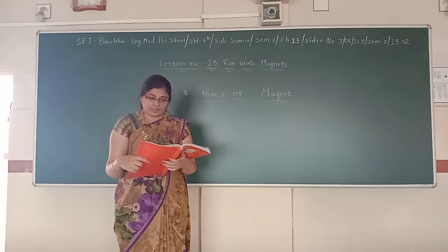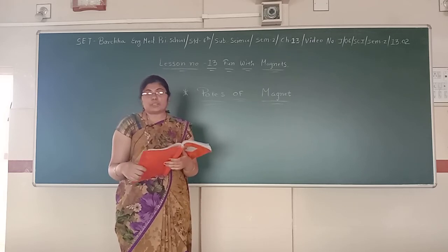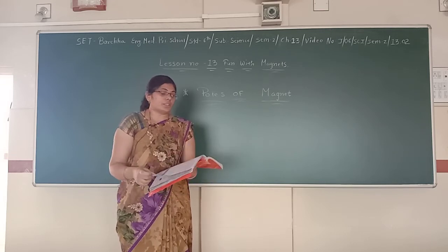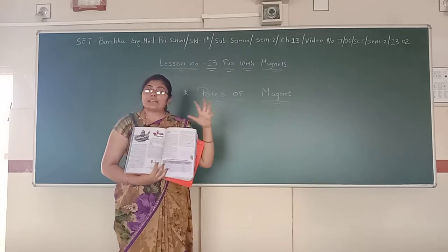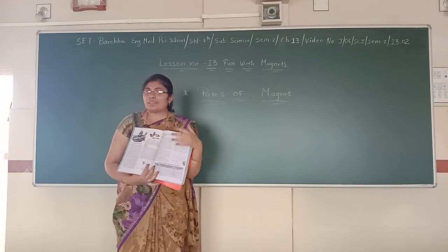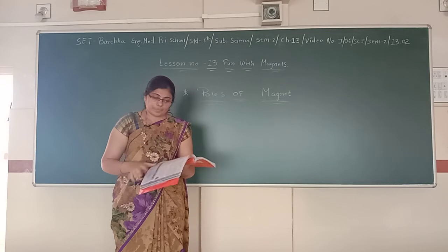Can you now mark the location of poles in the kind of magnet shown in figure 13.4? Yes, now you can easily see the 13.4 figure. Different types of magnets, where the iron filings get attracted and stick to the part, have a magnetic field. There, the magnetic power is more.